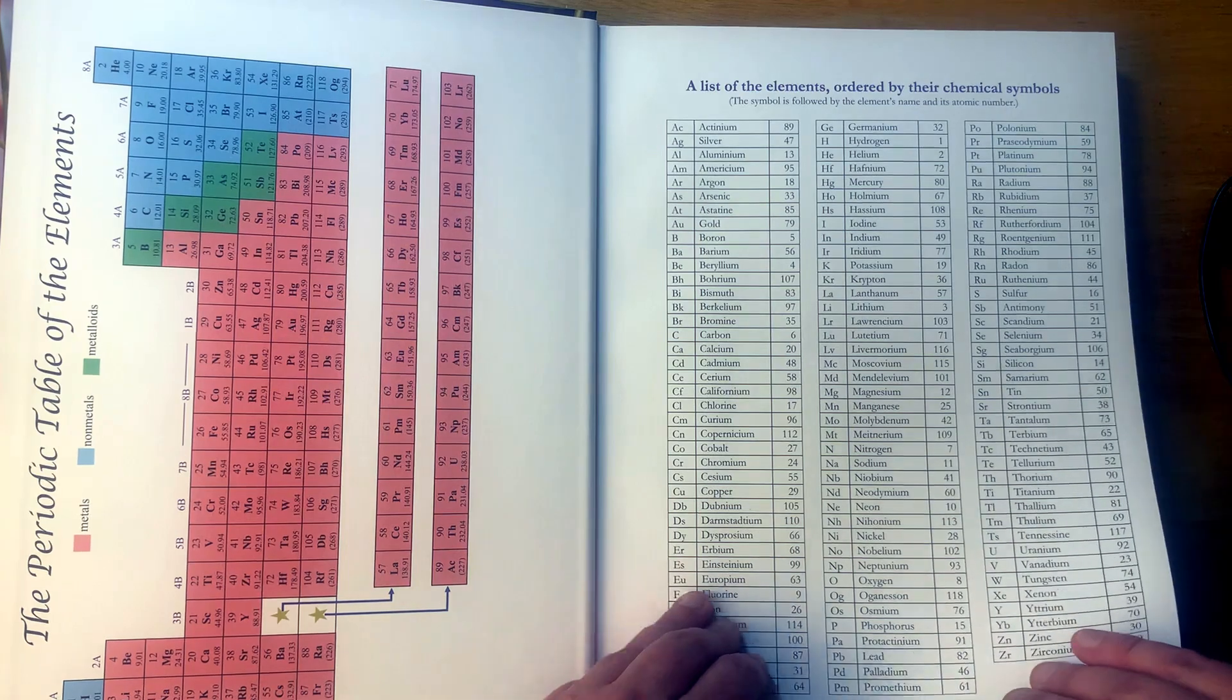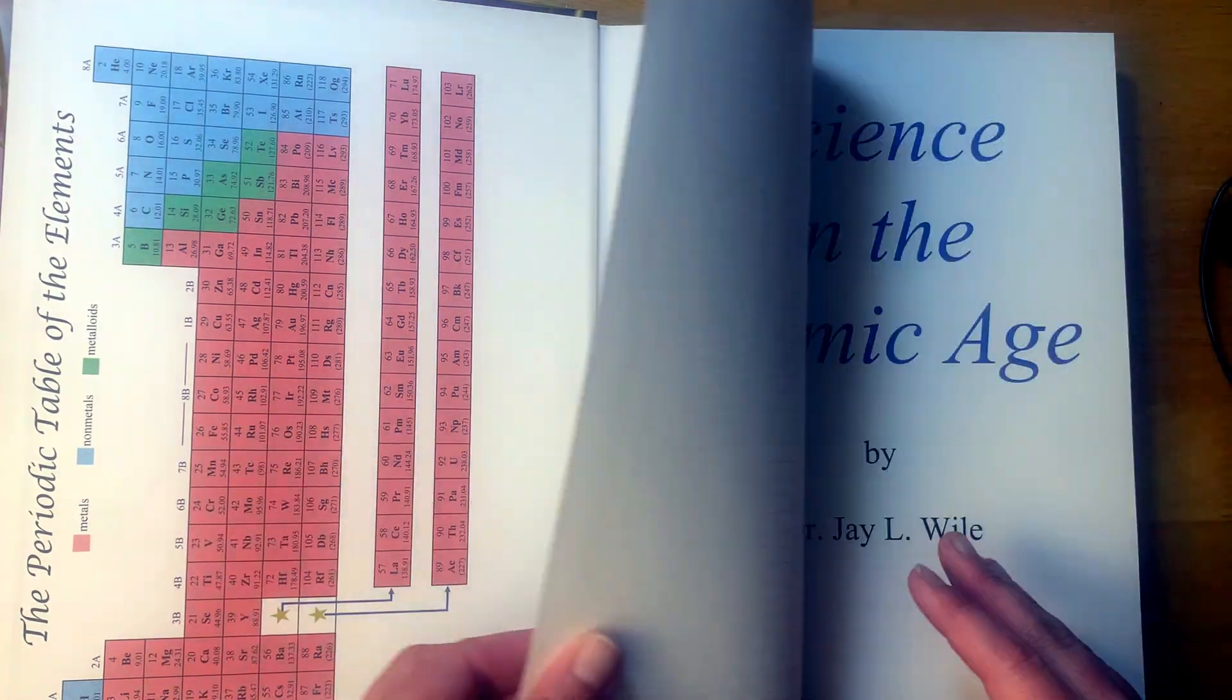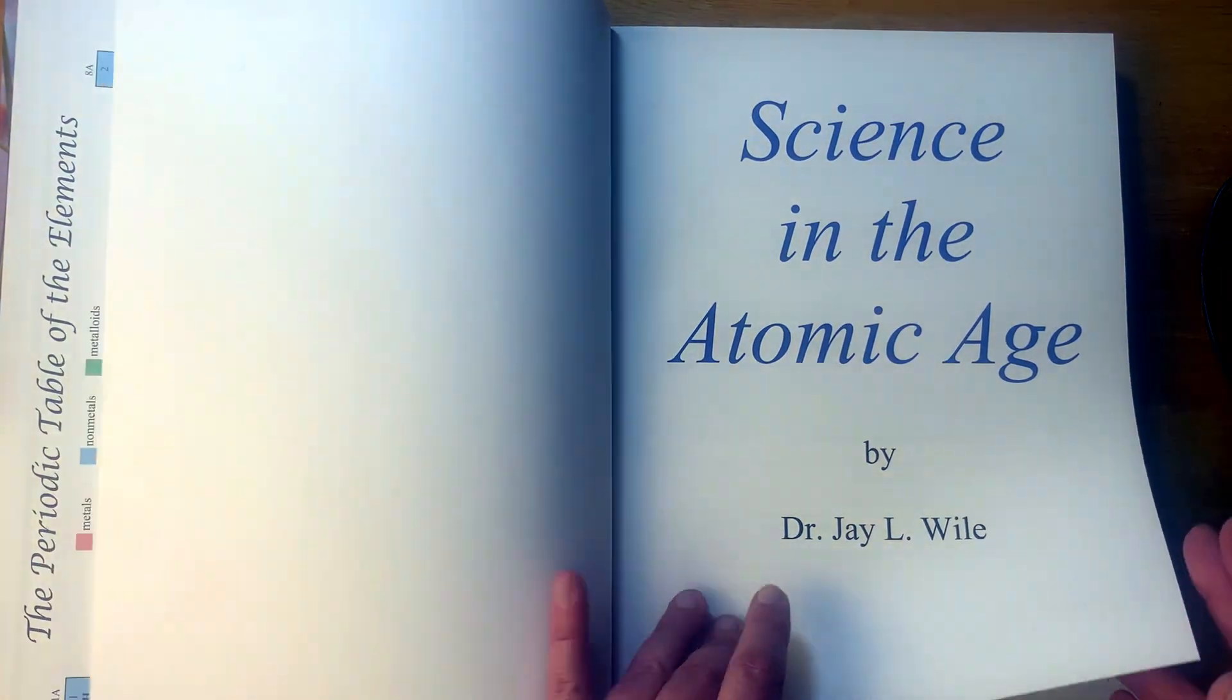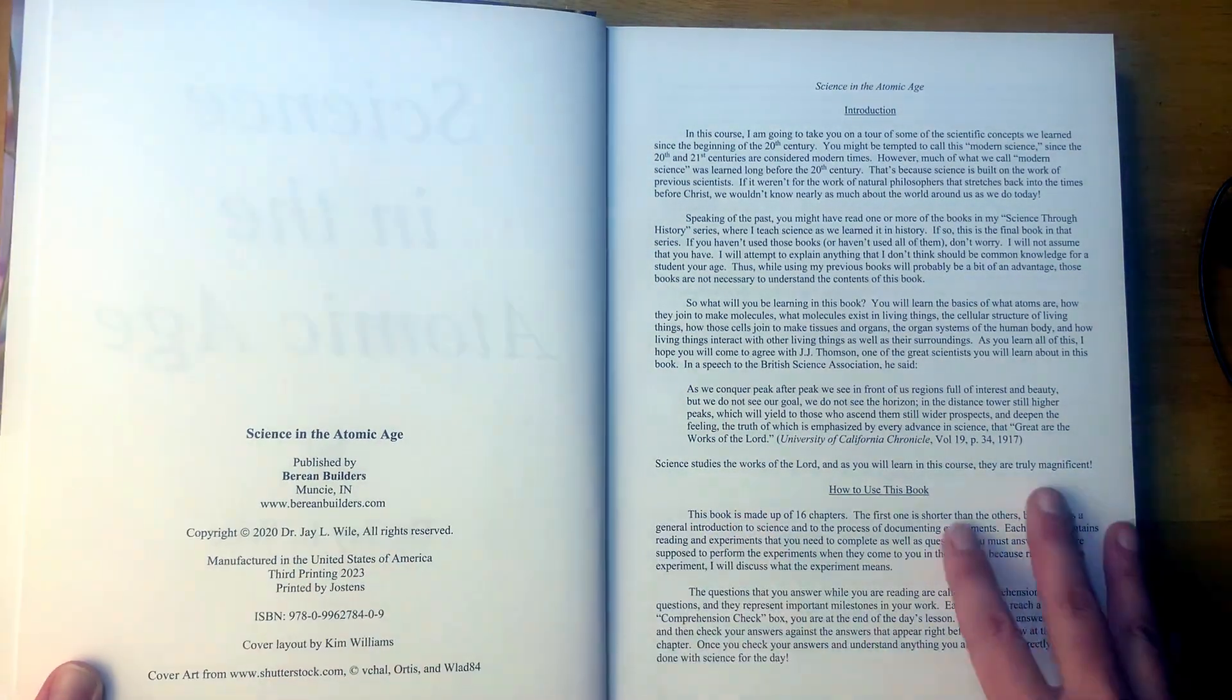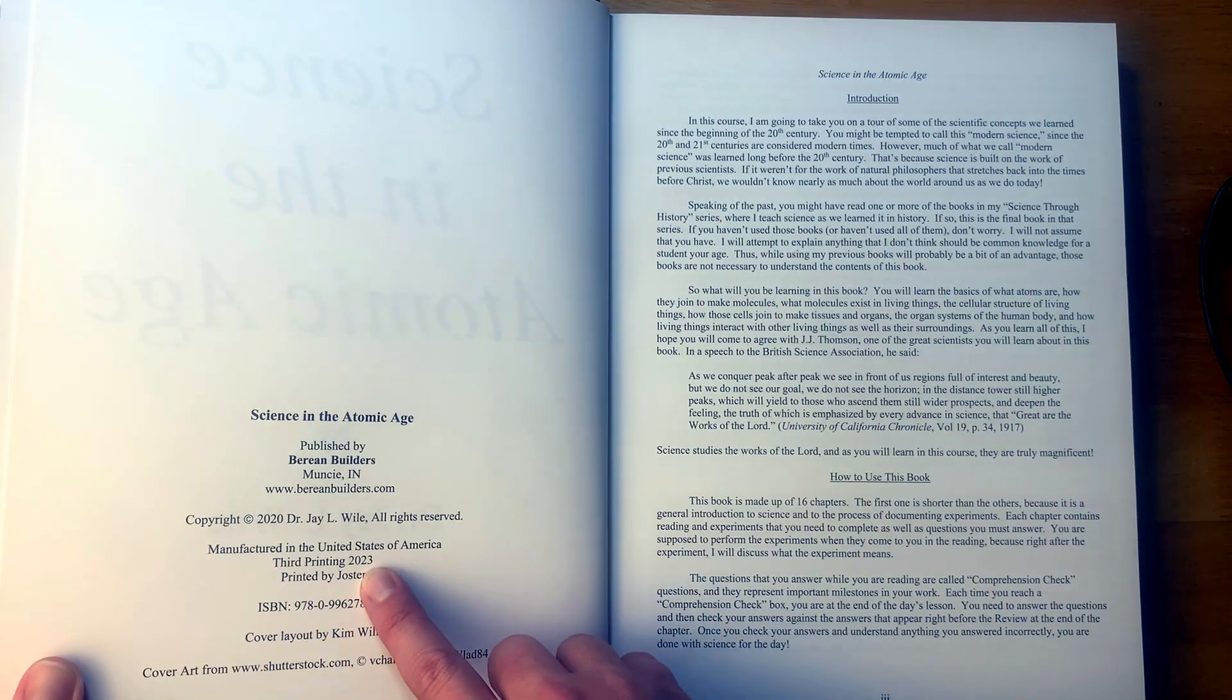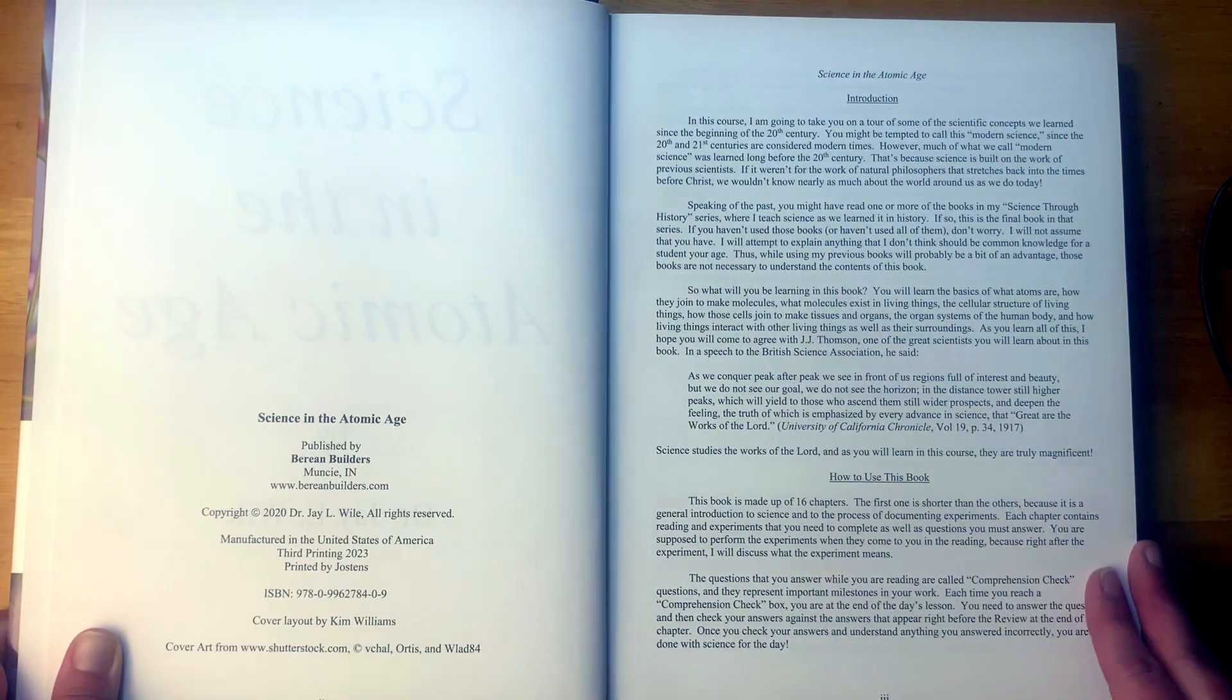I know Berean Builders has a progressive science course. They start with Science in the Beginning and then it's I think it's Science in Ancient Times and then I don't know what comes after that. But this one was published in looks like 2020. So this one is pretty recent, third printing 2023. All right, so I guess this was probably started in 2020.